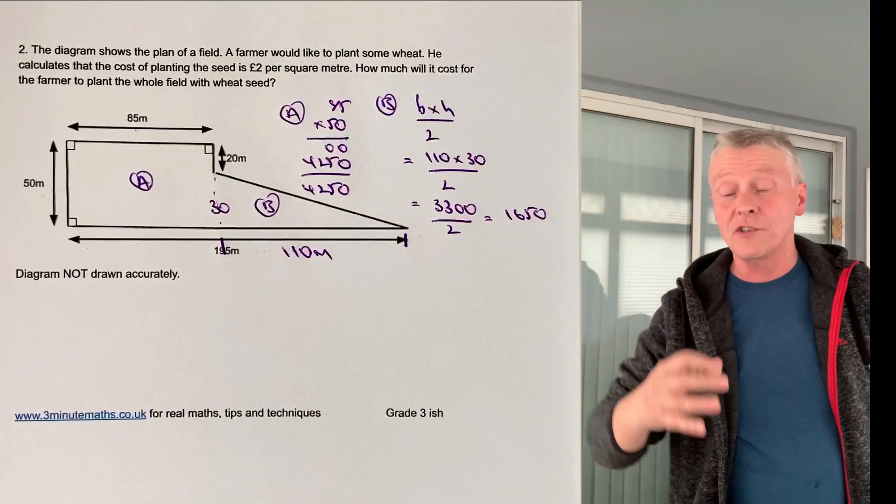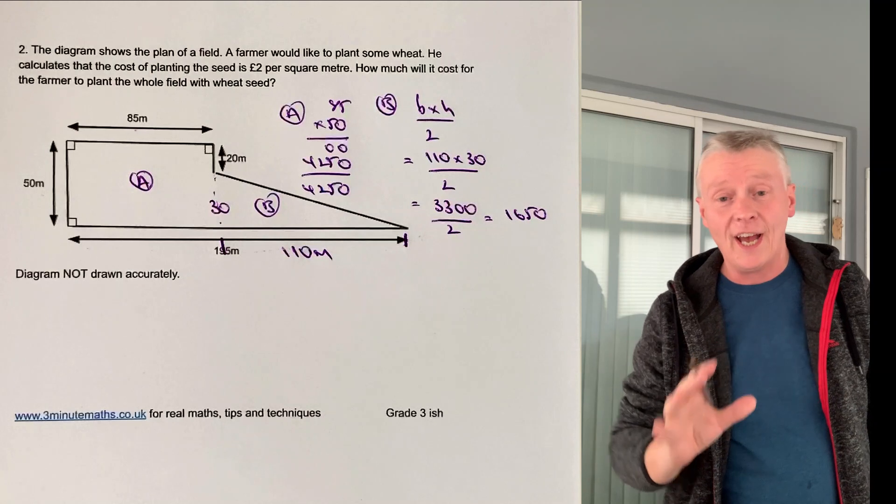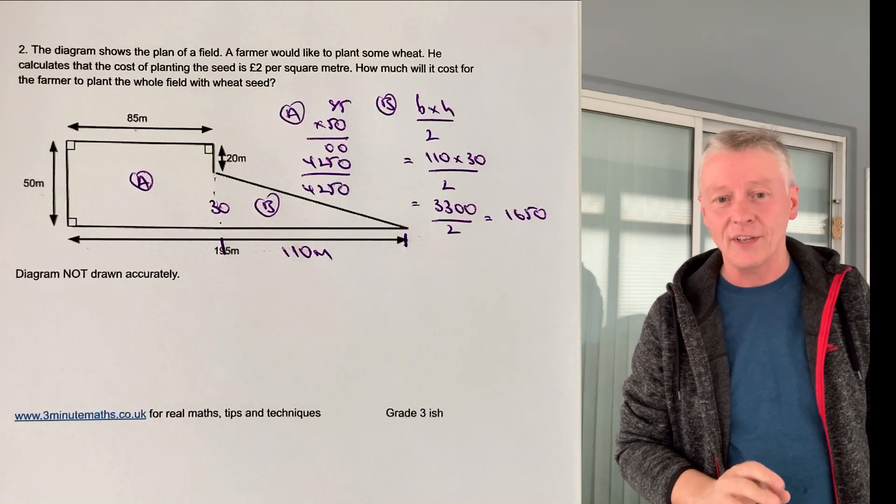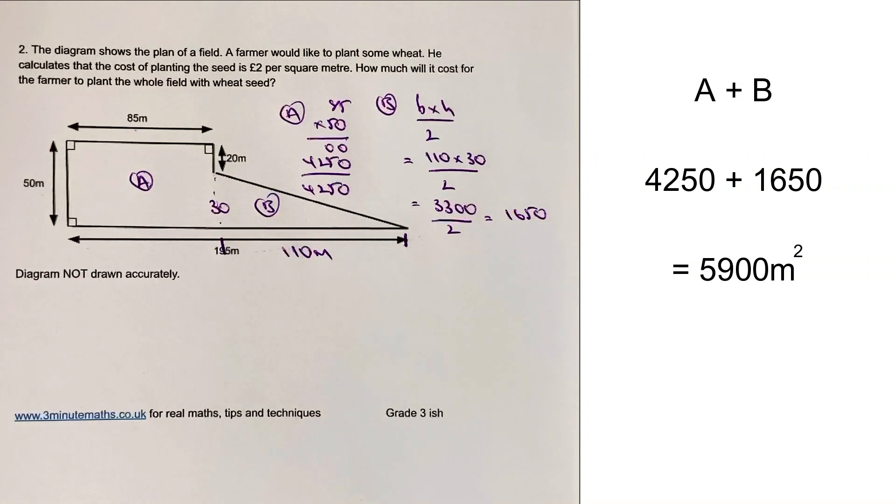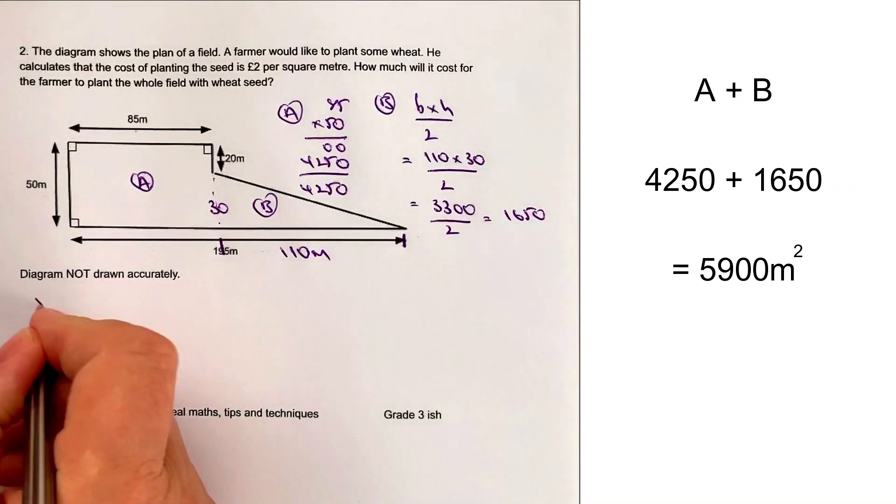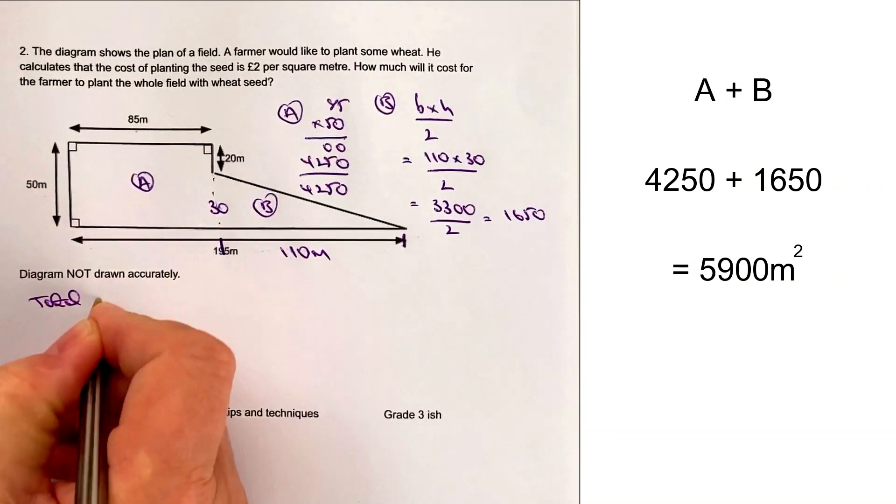Now we've got the two areas of the two separate shapes, A and B. We're going to add those two together and then multiply by 2 pounds.